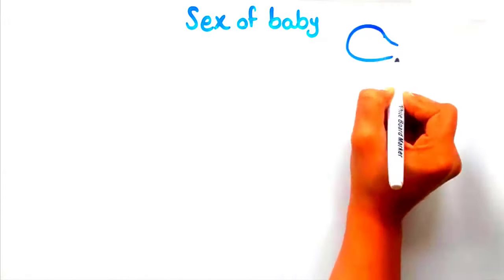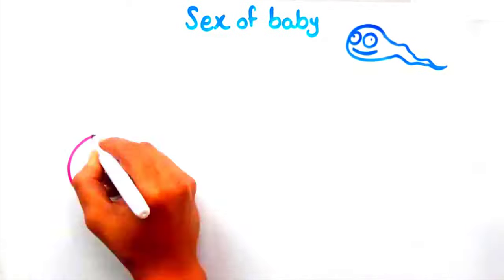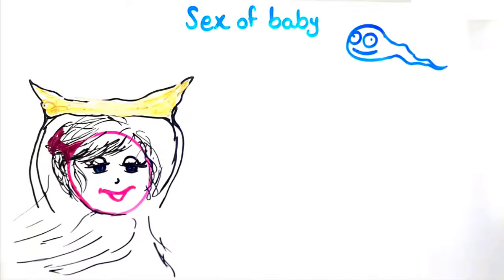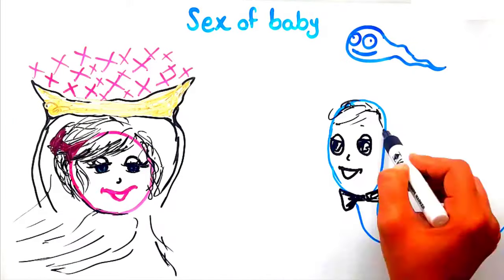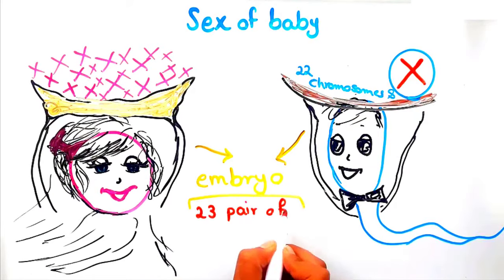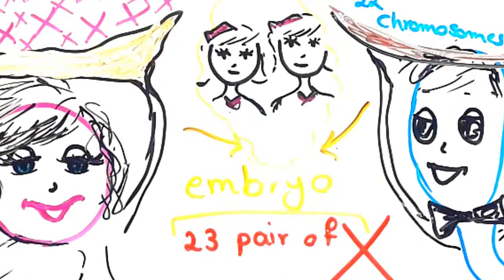The sex of the babies depends on the sperm that fertilizes the egg. The egg has one X chromosome besides the other 22 chromosomes, and if the sperm that fertilizes the egg carries an X chromosome, then the embryo will have the 23rd pair of chromosomes as XX and develop into a female.